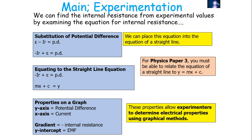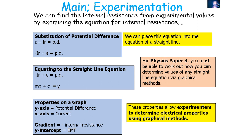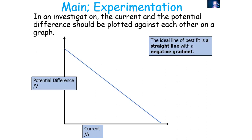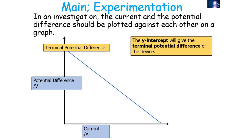That's really important because in Physics Paper 3, you've got to be able to relate the equation of a straight line graph to y equals mx plus c, and determine values from a graphical method. If we place the terminal PD on the y-axis and current on the x-axis, we would get an ideal line of best fit — a straight line with a negative gradient. The y-intercept gives the EMF of the power source. In actuality, we are measuring the terminal potential difference, but we'll approximate this to the EMF, because in this experimental setup the terminal PD and EMF will be very similar values, as we'll have little lost volts.